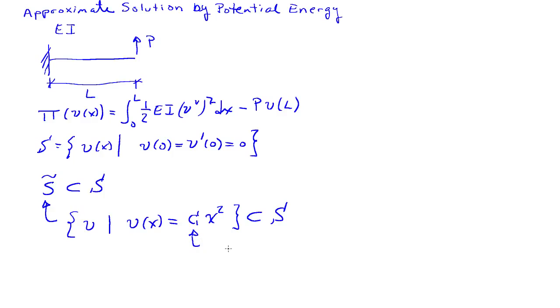We need to find C, which is the unknown. We'll plug this functional form into our potential energy and minimize pi with respect to C.